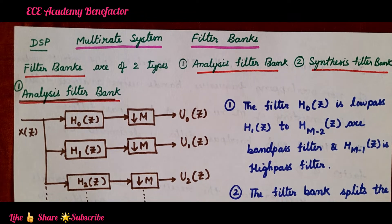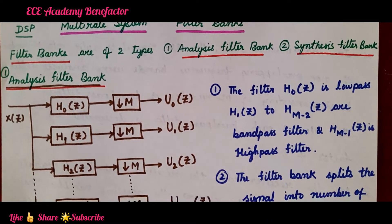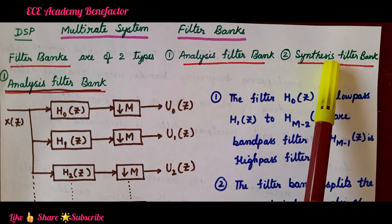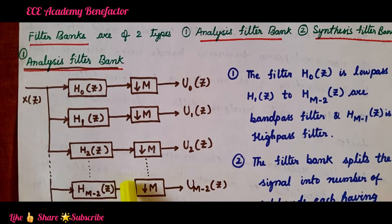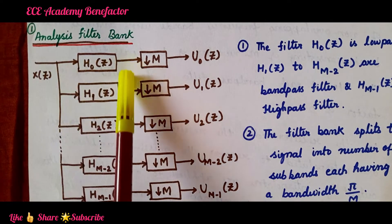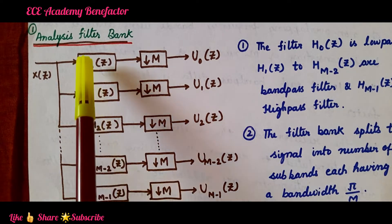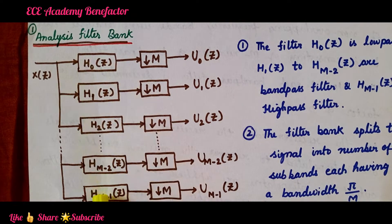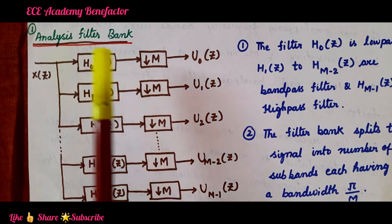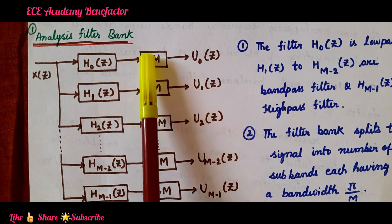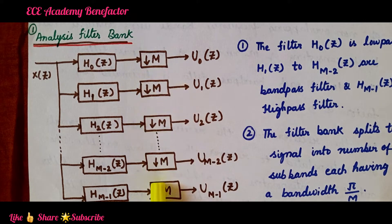Let us start with a quick review of the Digital Filter Bank. Filter Banks are of two types: Analysis Filter Bank and Synthesis Filter Bank. The Analysis Filter Bank converts an input signal into a number of subband signals when passed through different sets of bandpass filters. In Subband Coding, we use a Down Sampler at the transmitter section.